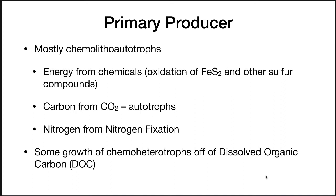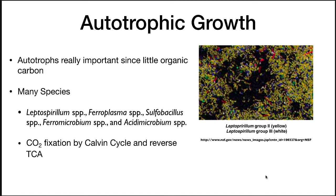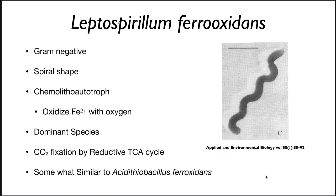Some growth of chemo-heterotrophs occurs on dissolved organic carbon present in the environment. When the chemo-litho autotrophs die, their carbon is degraded by chemo-heterotrophs. The autotrophs are really important since there's very little organic carbon in these rocky areas — water is just flowing over rocks. Many species are autotrophs: Leptospirillum, Ferroplasma, Sulfobacillus, Ferromicrobium, Acidimicrobium. Their CO2 fixation is by the Calvin cycle and the reverse TCA cycle, which we'll discuss more when we cover the carbon cycle.